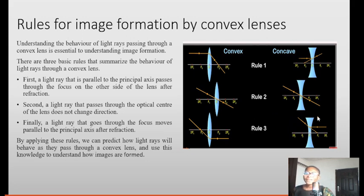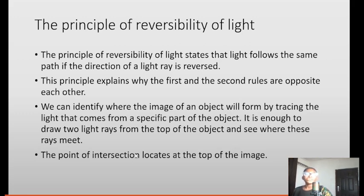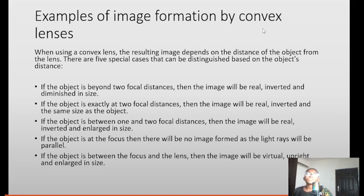The principle of reversibility of light states that light follows the same path if the direction of a light ray is reversed. This explains why the first and third rules are opposite each other. To find where an image is formed, draw two light rays from the top of the object using any two rules — where the rays meet is where the image is formed.